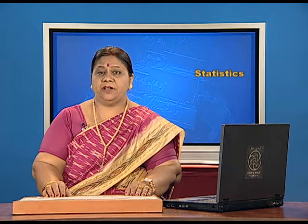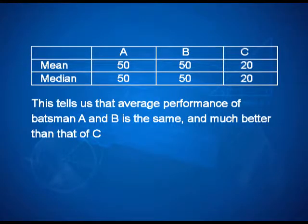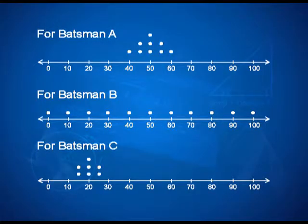The mean and median for this data are: for A, B, and C, the mean and median are 50, 50, 20 and 50, 50, 20 respectively. This tells us that the average performance of batsman A and B is the same and much better than that of C. But this is only part of the story. Now let us plot the scores as dots on a number line. For batsman A, the scores are ranging between 40 to 60 and they are clustered. For batsman B, they are scattered from 10 to 90. And for batsman C, they all lie between 10 and 30.